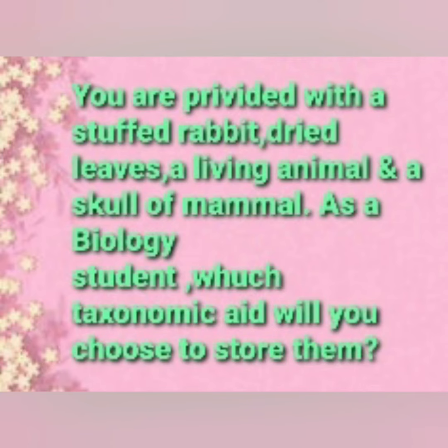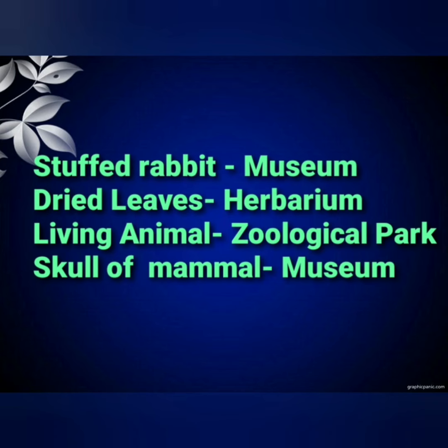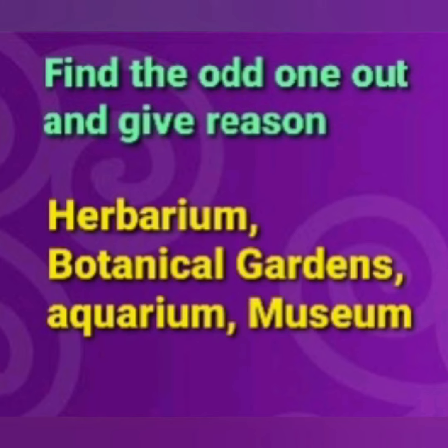Next question: you are provided with a stuffed rabbit, dried leaves, a living animal, and a skull of a mammal. As a biology student, which taxonomic aid will you choose to store them? The stuffed rabbit in a museum, dried leaves in a herbarium, living animal in a zoological park, and skull of mammal in a museum.